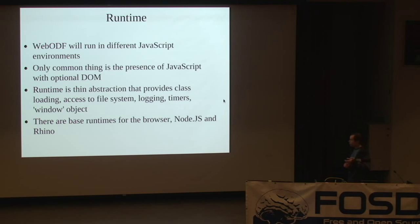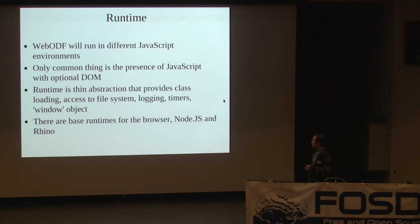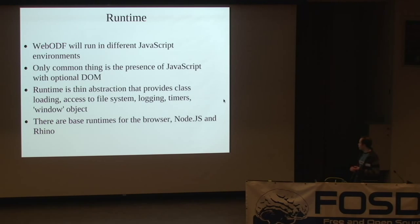The runtime: WebODF runs in different runtimes, and the only common thing between all the runtimes is that they're all JavaScript. Some may have a DOM — if they don't have a DOM you cannot do everything, but you can still do the unzipping and base64 encoding for example. The runtime is a thin abstraction layer that gives you access to the file system, logging, use of timers, and the window object. We currently have runtimes for the browser, for Node.js — which is the server currently running this presentation — and Rhino, which is a JavaScript implementation.